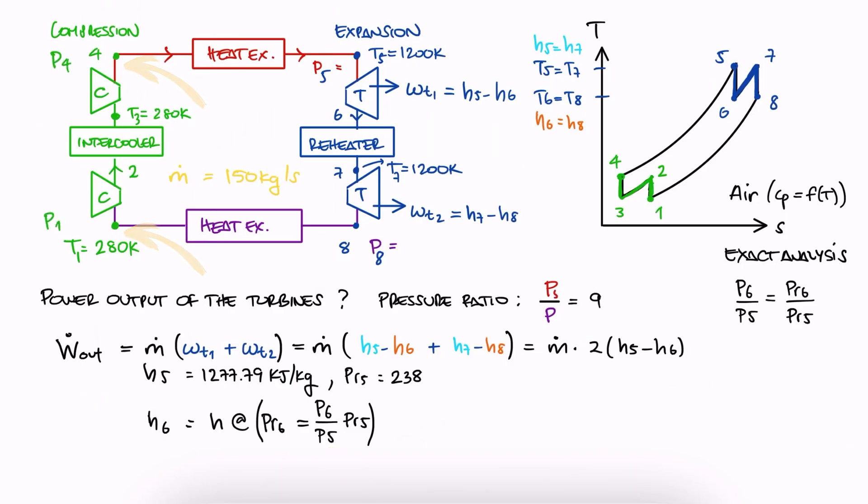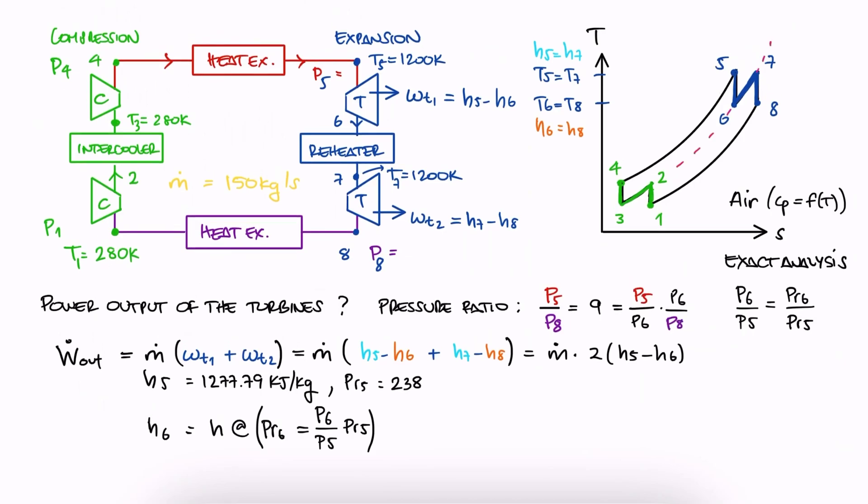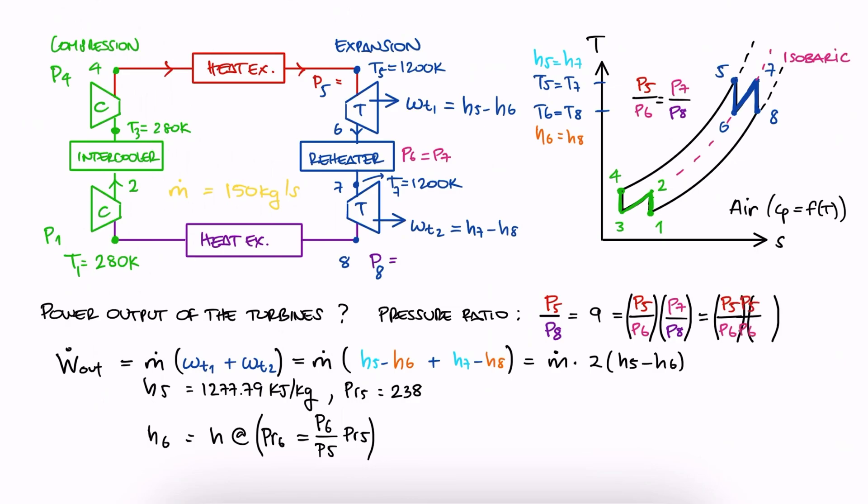We know that P4 over P1, or P5 over P8 is 9, given by the problem. Since P5 over P8 can be written as P5 over P6 times P6 over P8, and P6 is equal to P7, we see that P5 over P8 is equal to P5 over P6 times P7 over P8. And since the jump from 5 to 6 is the same as the jump from 7 to 8, then P5 over P6 is equal to P7 over P8, which means that P5 over P8 is P5 over P6 squared. This just means that P5 over P6 is the square root of 9, or just 3. And since we want P6 over P5, we take the reciprocal to say it's one third.